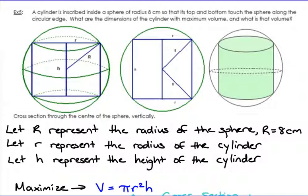Example number five: a cylinder is inscribed inside a sphere of radius 8, such that its top and bottom touch the sphere along the circular edge. What are the dimensions of the cylinder with maximum volume? So we need a volume formula, take the derivative, set it equal to zero, and so on. Looking at the diagram, the idea is: here's a sphere, and we want to fit a cylinder inside it so that it touches the sphere's edges — that contact at the edges gives you your maximum.